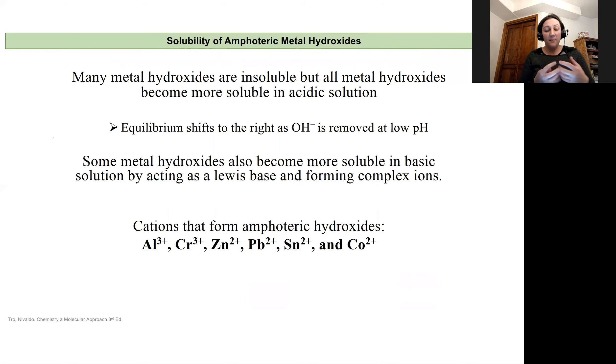Some metal hydroxides are going to be more soluble under basic conditions when they're acting as a Lewis base. So metal hydroxides can kind of go either way. They can get more soluble with an acidic condition, or they can get more soluble with a basic condition, and aluminum is going to do both.